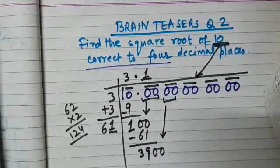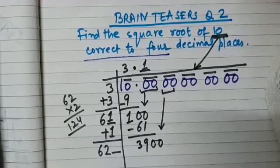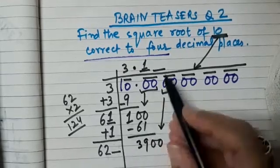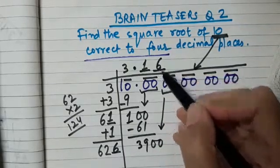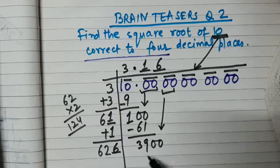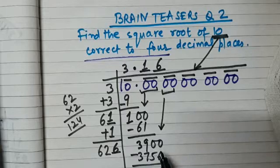We bring down the next period — a pair of zeros. What will be the next divisor? 61 plus 1 is 62, and we have to think of a digit here so that it gives us a three-digit number, multiplied by the same digit in the quotient, with a product just less than 3900. So 626 × 6 = 3756.